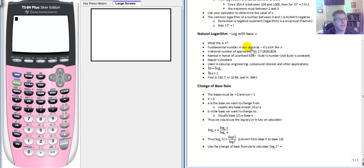It's a constant. In fact, it's a fundamental number in our universe. It's an irrational number that's approximately 2.718281828. And then this pattern does not continue. It actually changes. It's named in honor of Leonard Euler. And it's referred to as Euler's number or Napier's constant. It is not Euler's constant. So make sure you keep that separate. This is a number that's used in engineering and calculus and compound interest and other applications. And we'll see some of these applications. Growth and decay. We'll use the value e.